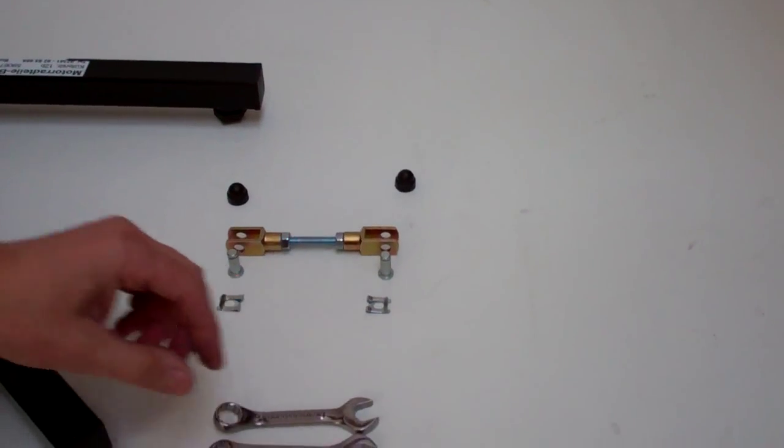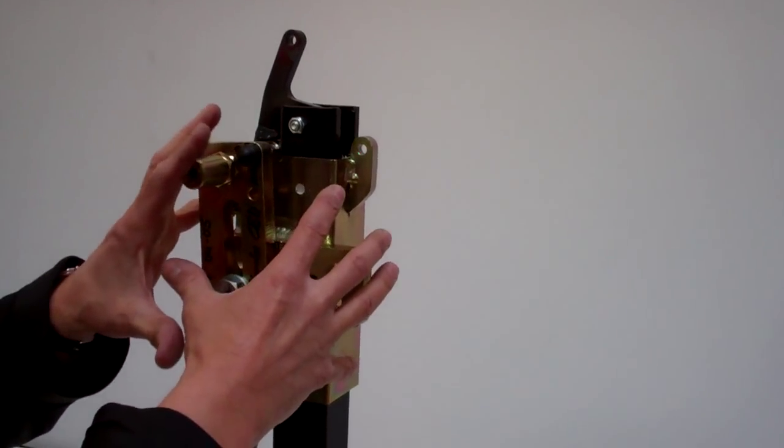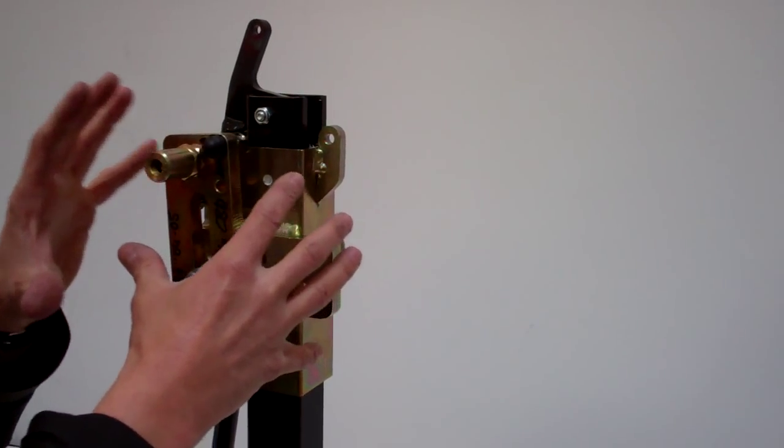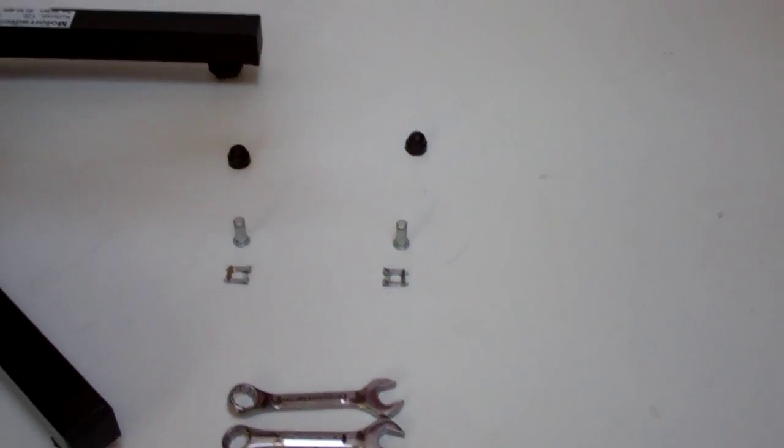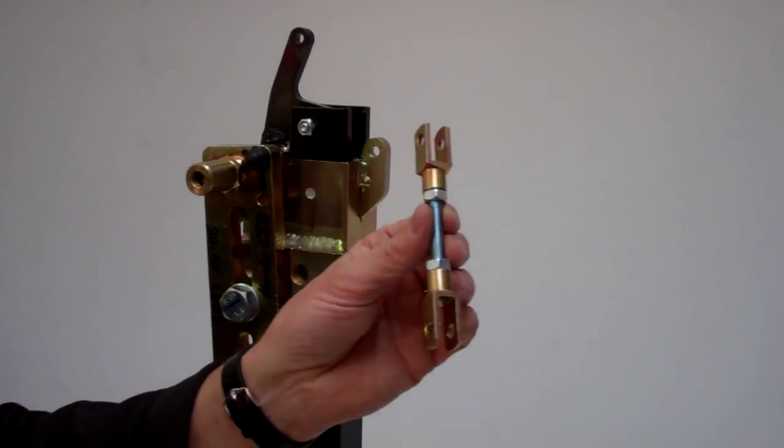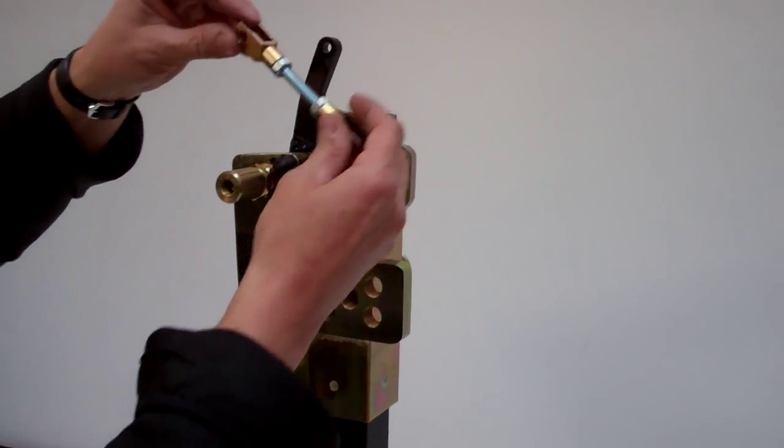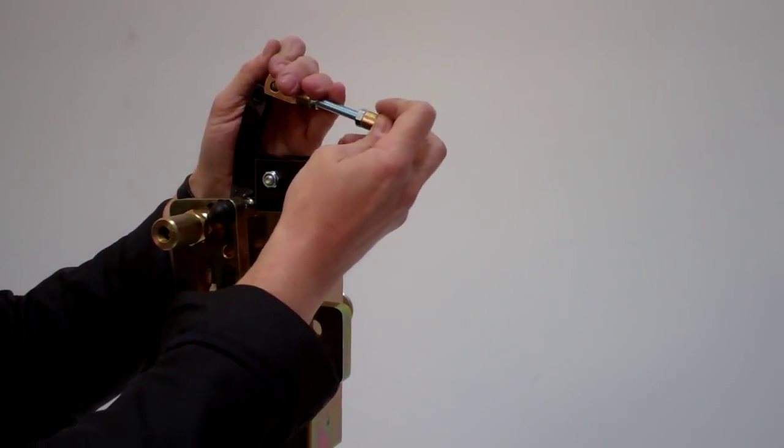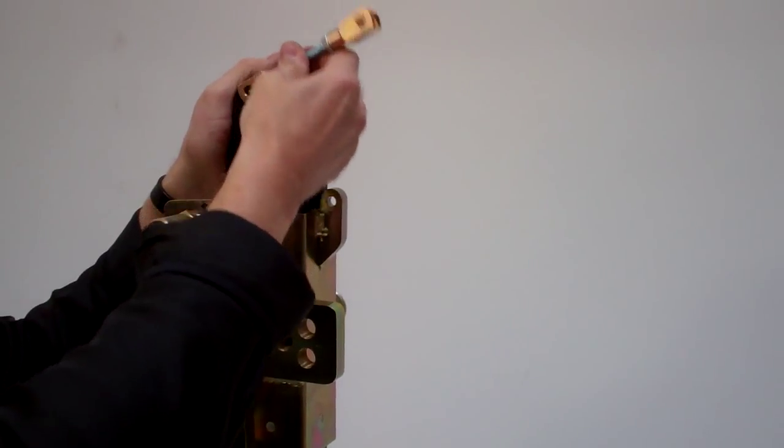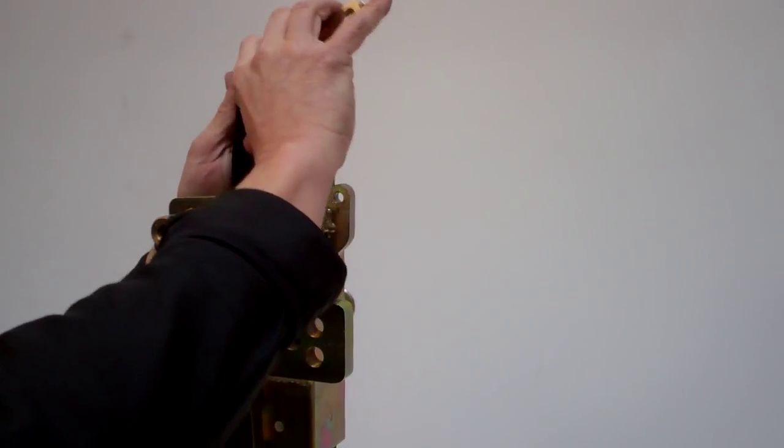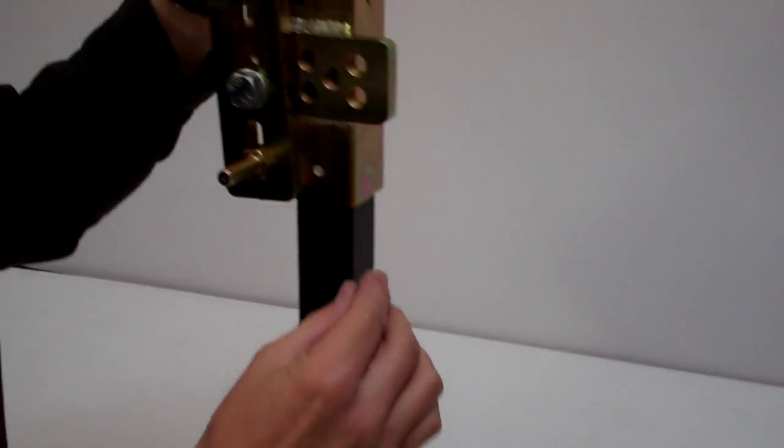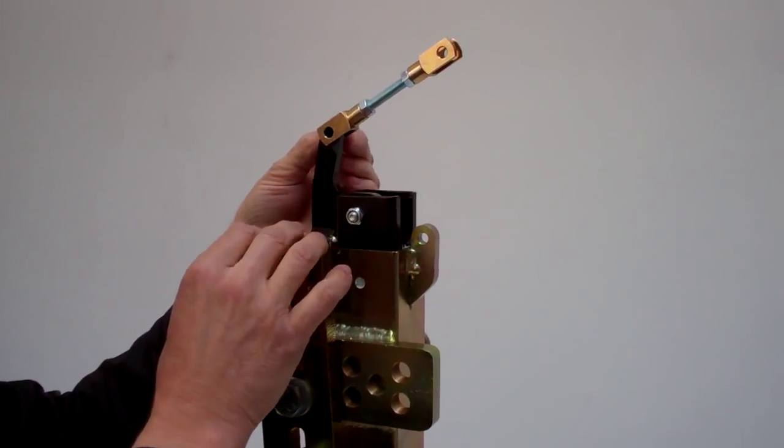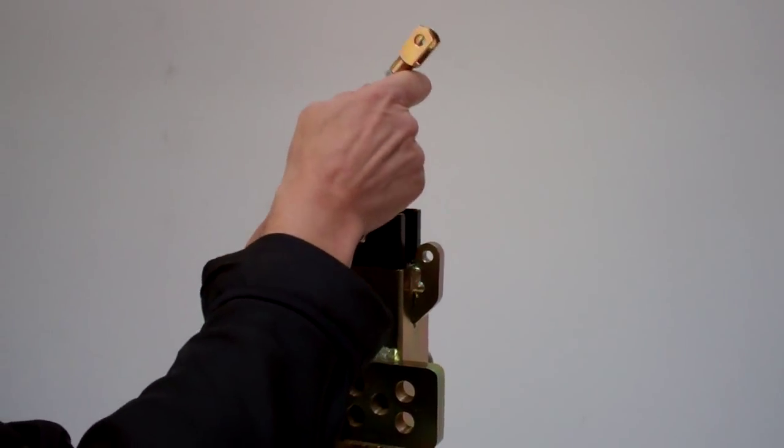To connect the action of the lever to the mechanism that will lift your motorcycle, we have this adjustable connector rod which is placed onto the handle on one end and secured with a retainer pin.